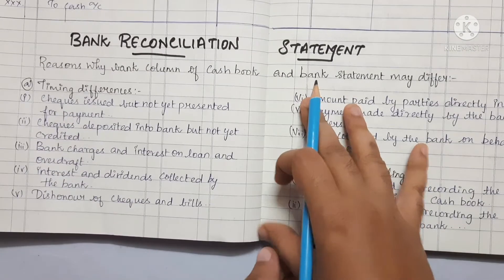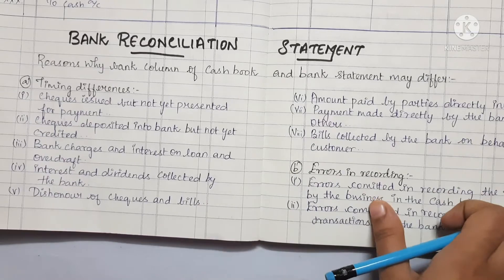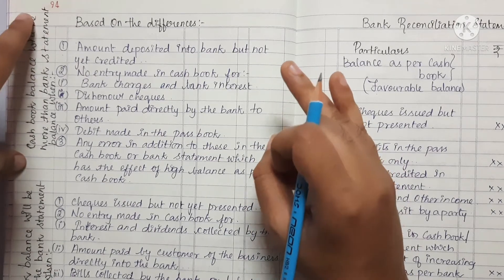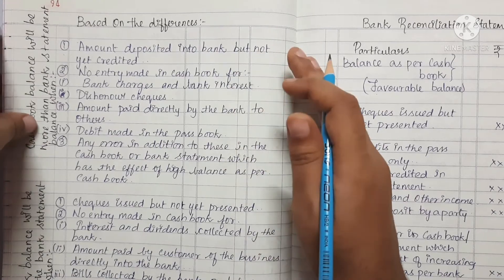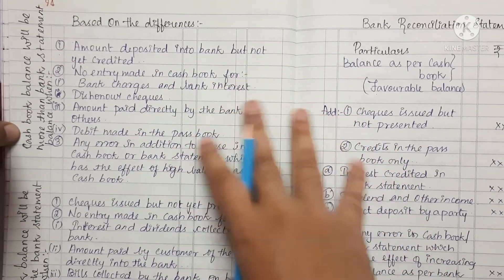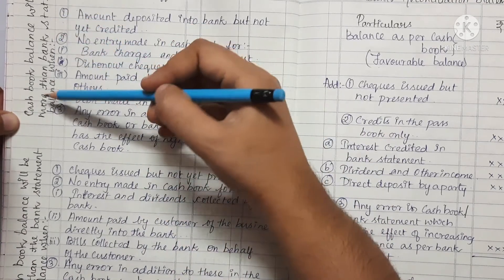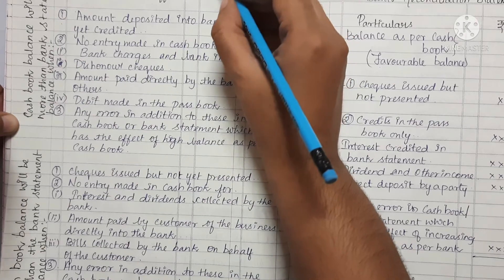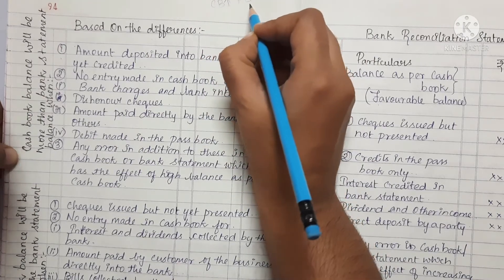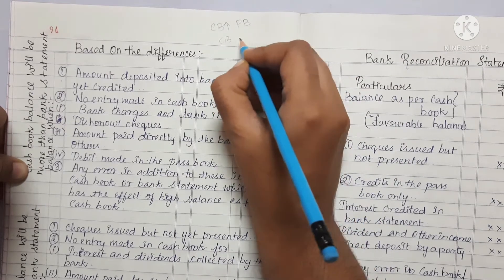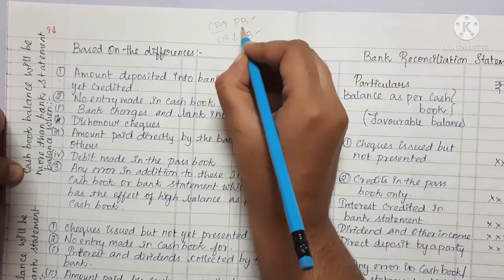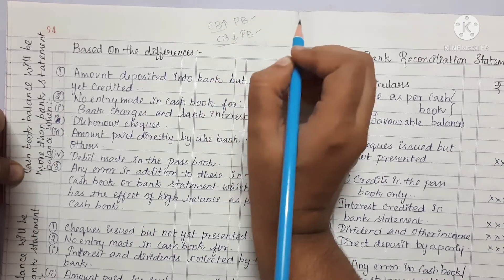We have explained the reasons one by one. Cash book balance will be more than bank statement — bank statement means pass book. And in the other case, cash book will be less than bank statement. So these two are the main reasons for difference between the cash book balance and the bank statement.